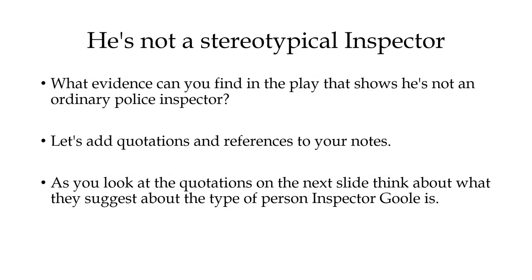He's not a stereotypical inspector — not what you'd expect a police inspector to be at all. So we're going to think about evidence in the play that shows he's not an ordinary police inspector. The six images suggest he's not there trying to find out who committed a crime. He's there to get the Birlings to think about the part they played in Eva Smith's demise. After all, there is really only Eric who has committed a crime in the play.